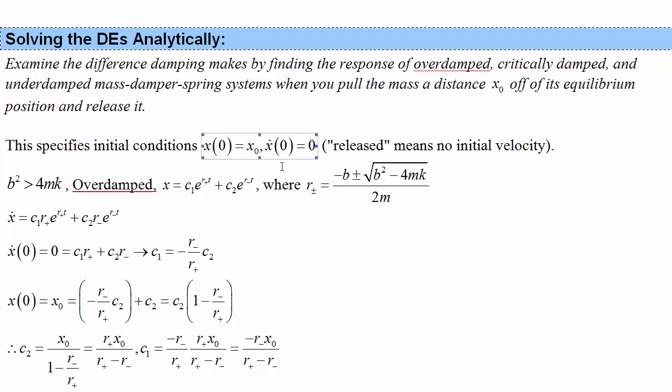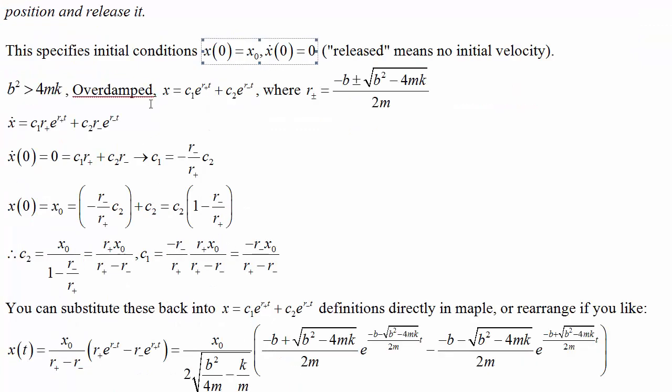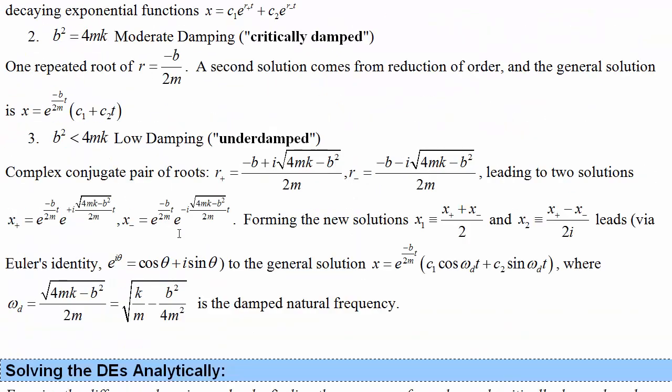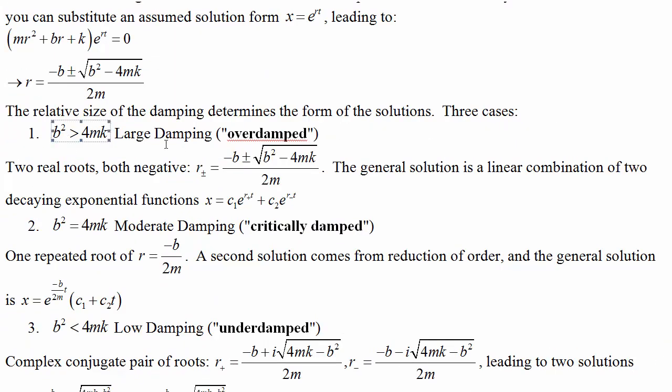You take the initial position and the initial velocity, assuming we release it, and we're going to try for the three different cases. The first case, where we've got real roots, we call overdamped. This is if damping is relatively large.